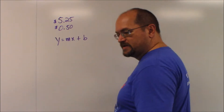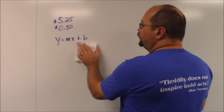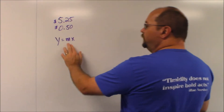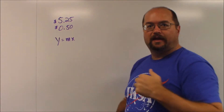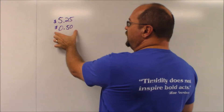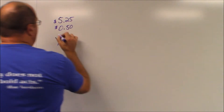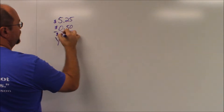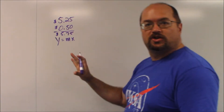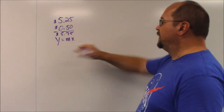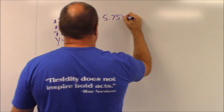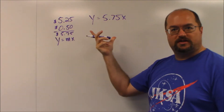So really we're just dealing with y equals mx. The m is the cost per person. We've got these two costs, and if I add these two up, I'm going to get $5.75. So now that I've got my m, I can rewrite this as y equals 5.75x. So this is the equation that I'm going to create.